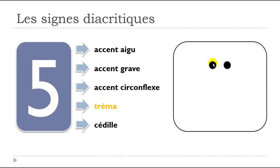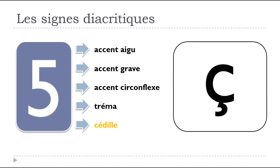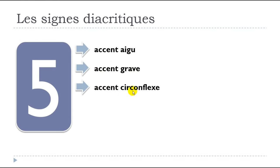Then tréma — just like two little dots here — and it will come on the top of A, E, I, O, and then U. And the last one, la cédille — if you look carefully, it will come right below your C letter. So remember: l'accent aigu, l'accent grave, l'accent circonflexe, le tréma, la cédille.